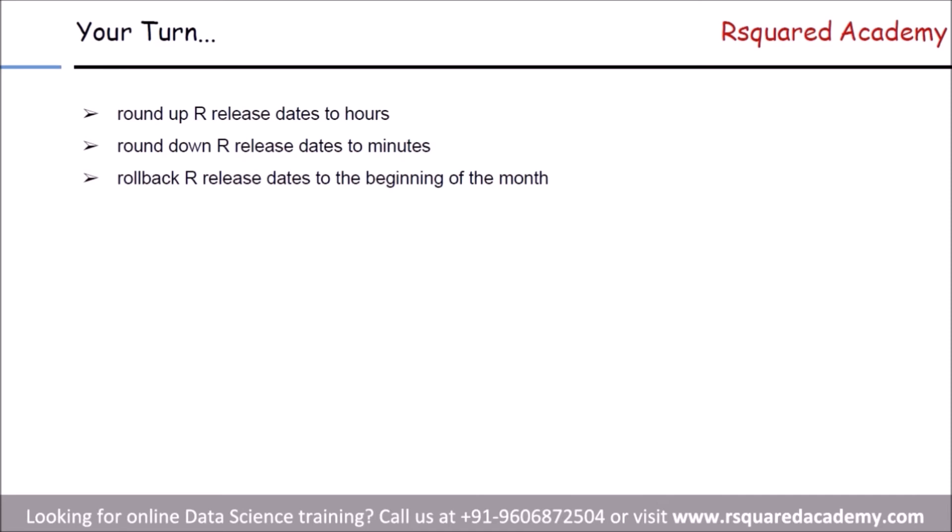A few practice questions: round up the release dates to hours using ceiling_date, and round down to minutes using floor_date. Also, roll back the release dates to the beginning of the month using the rollback function. All practice questions are in the learning management system as a PDF, and solutions are provided in an R script so you can compare your answers.